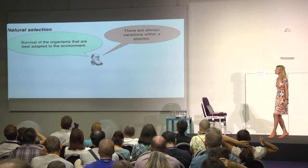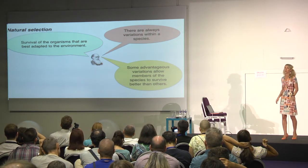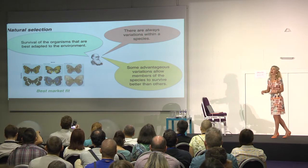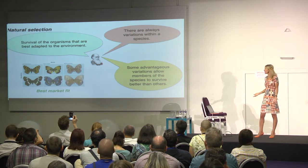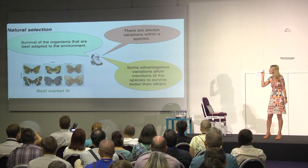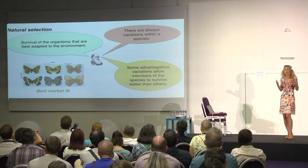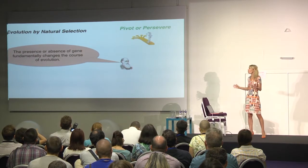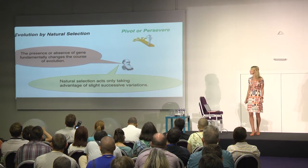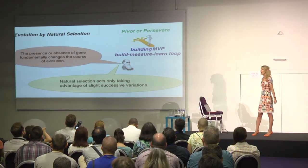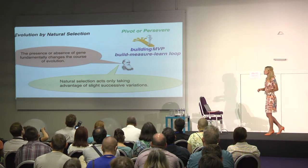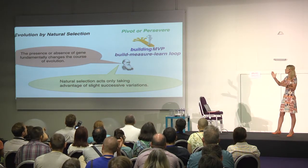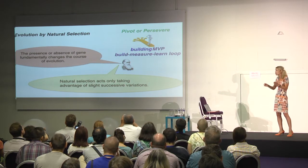Natural selection is the survival of the organisms that are best adapted to the environment. There are always variations within species, but some advantageous variations allow members of the species to survive better than others. It's nothing else but best market fit. And the art is to capture those advantageous variations which guarantee the best fit on a tough market. The presence or absence of a gene fundamentally changes the course of evolution — using lean startup methodology: pivot or persevere. Natural selection acts only by taking advantage of slight successive variations, which is nothing else than building minimum viable products and entering the build-measure-learn loop.